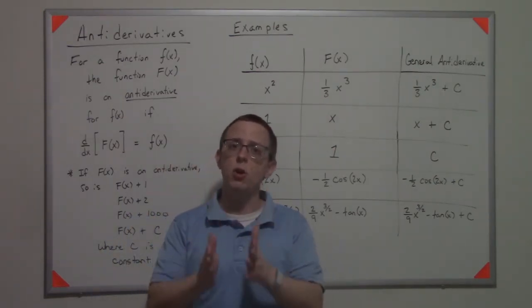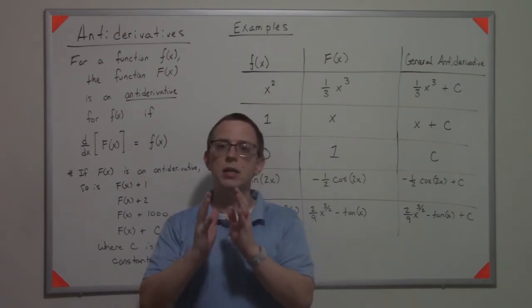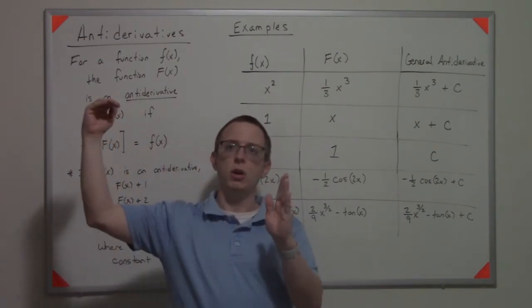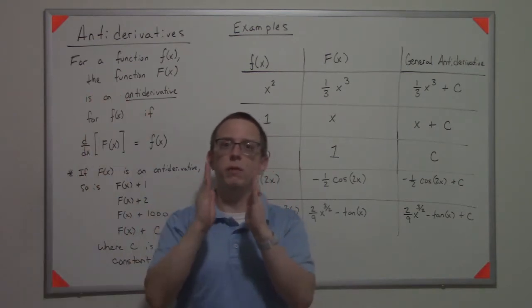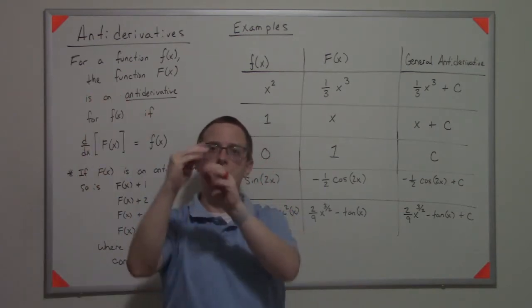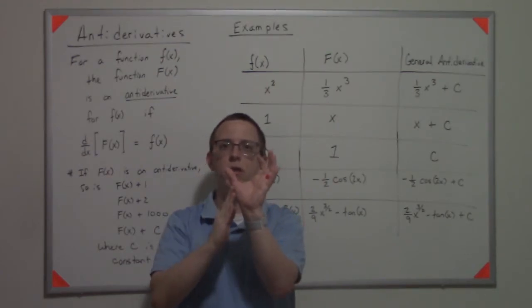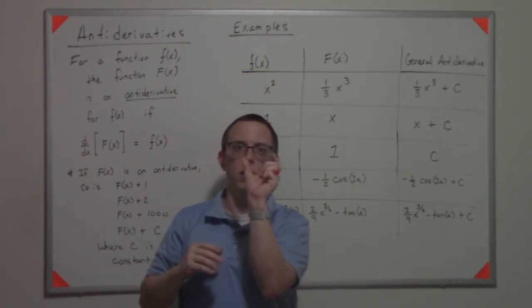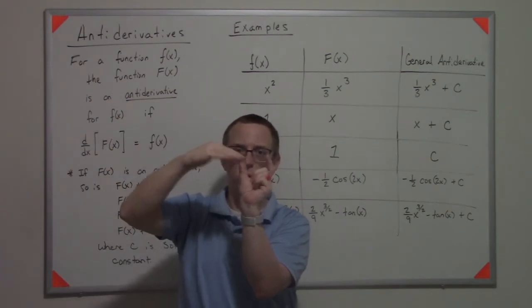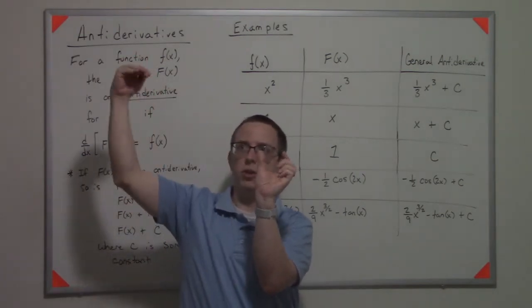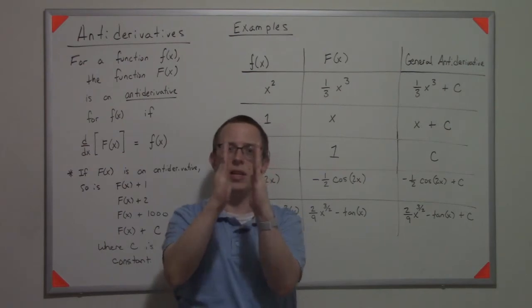The definition of an antiderivative says: if I start with a function, can I find another function that derives to it? We've normally started with f and taken its derivative, but what if we started with f and wanted to find the function where the end result was f?